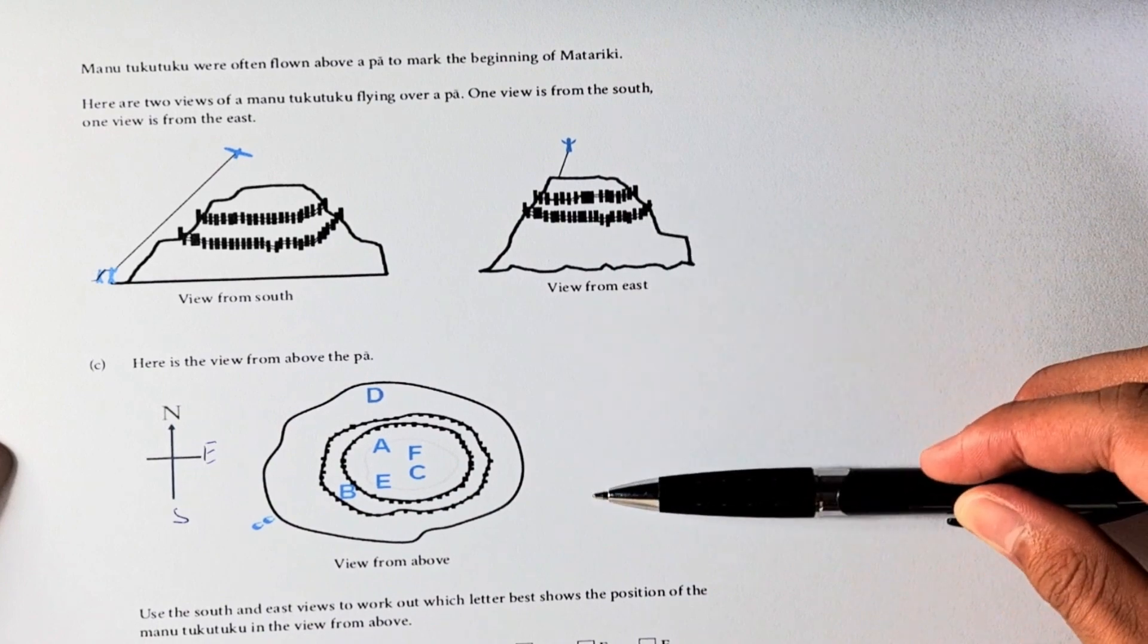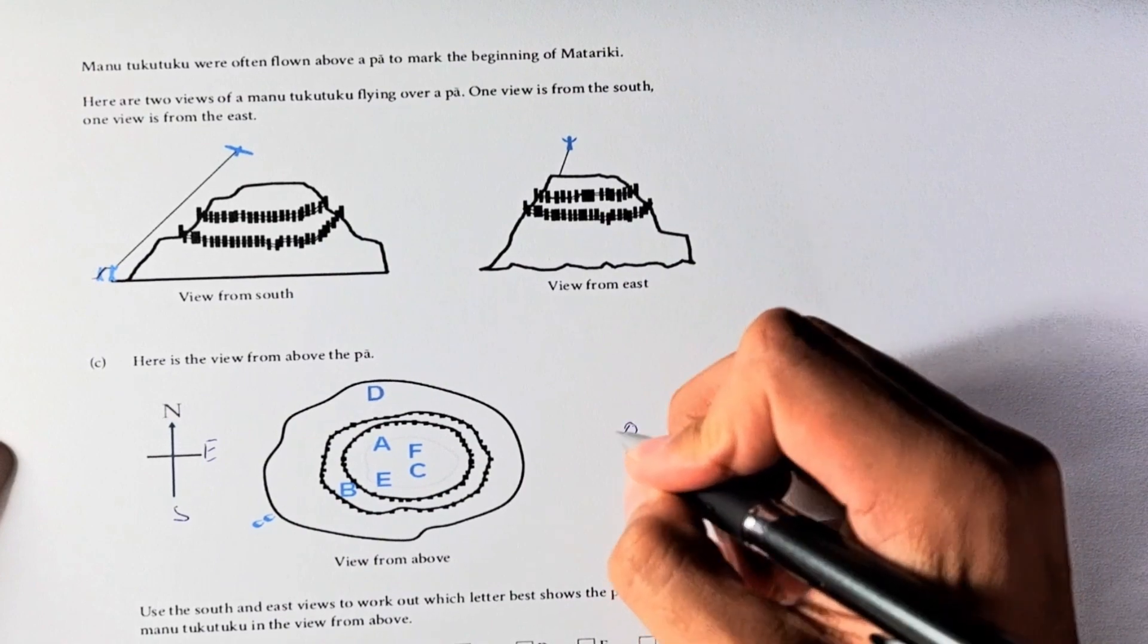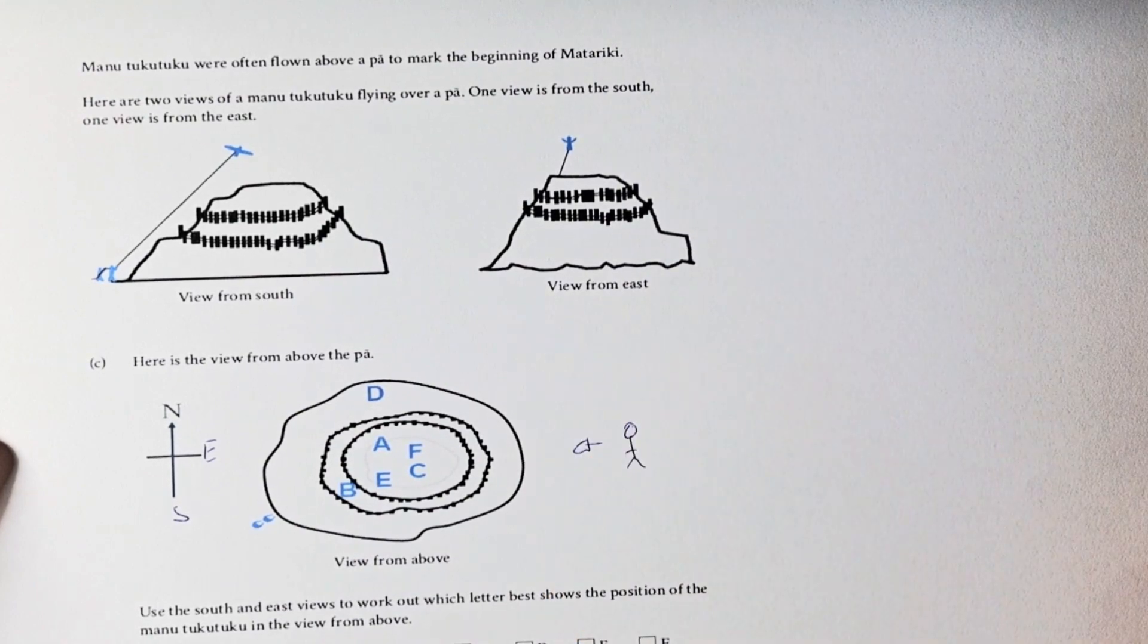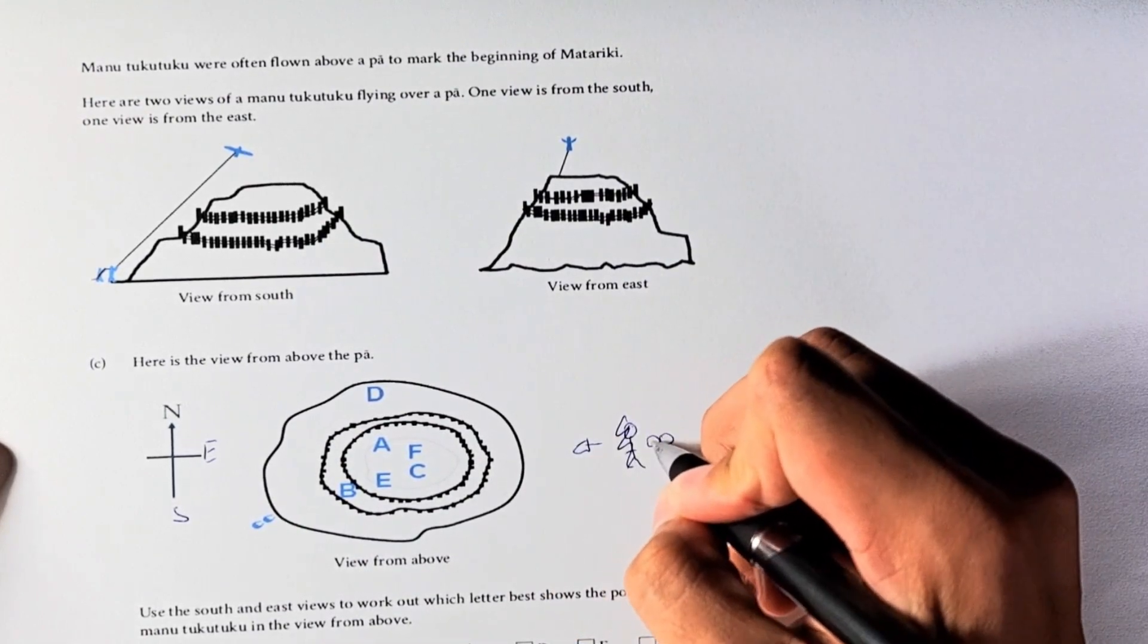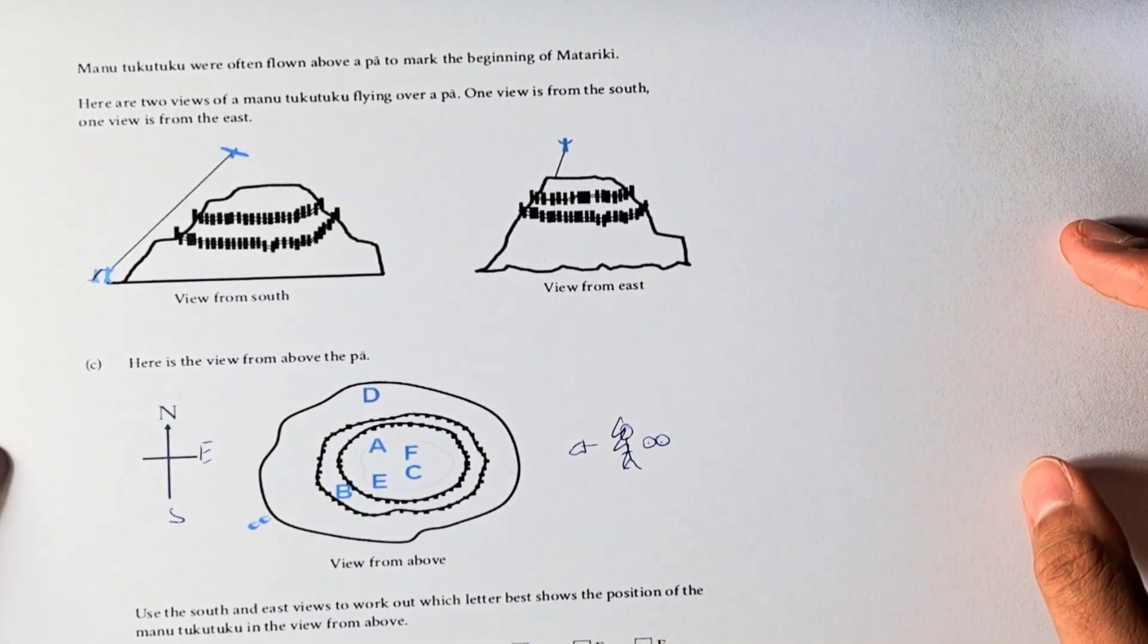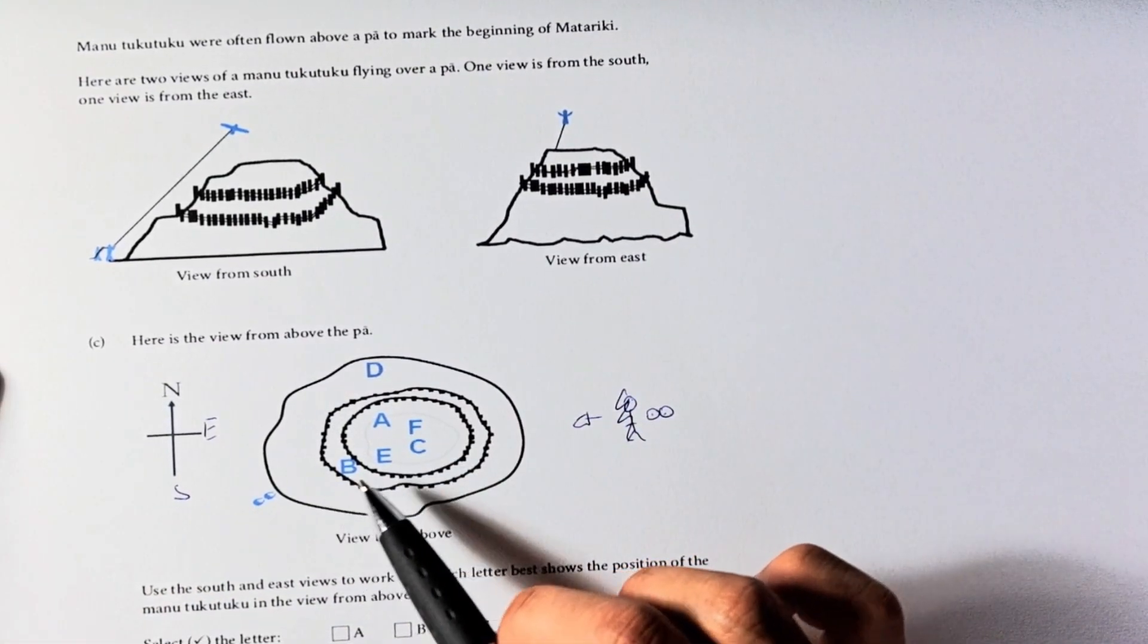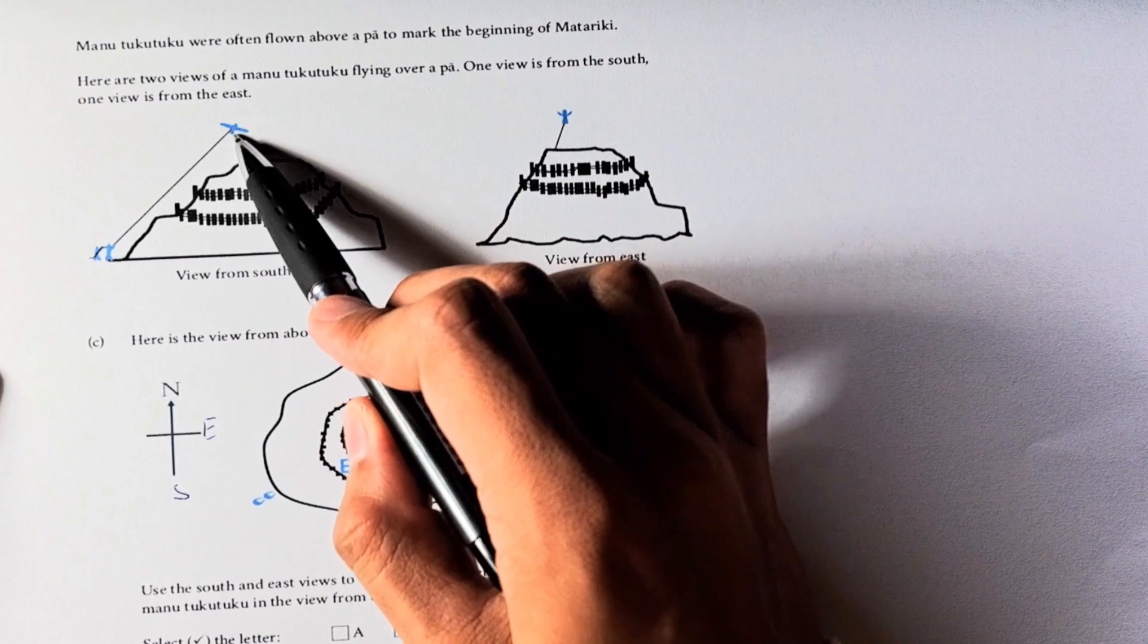East is here. East of the island would be here. This view from the east is looking at the island as though you were here. Let's draw a little person here looking at the island that way. Maybe eyes would be a better depiction. The question is actually asking us which of these letters is the kite.